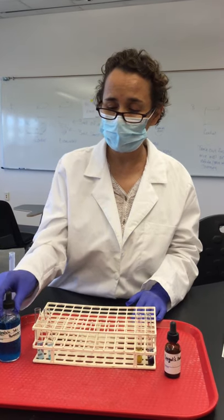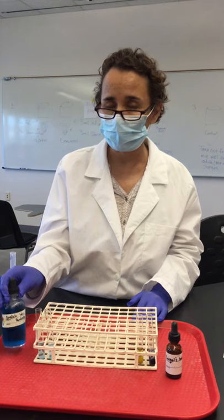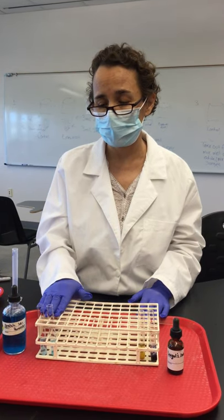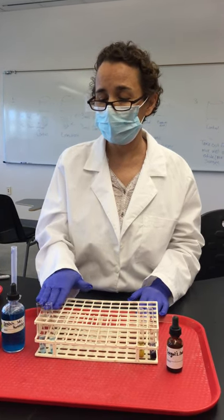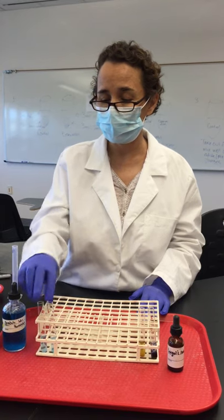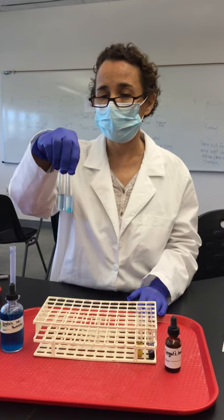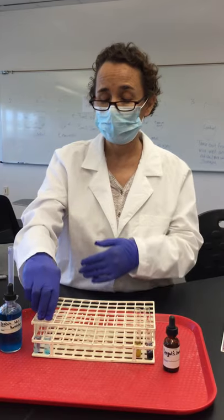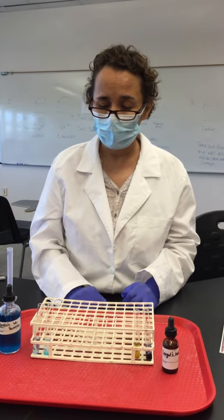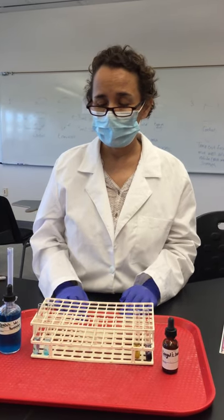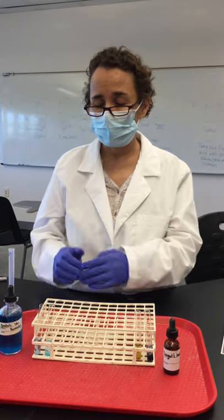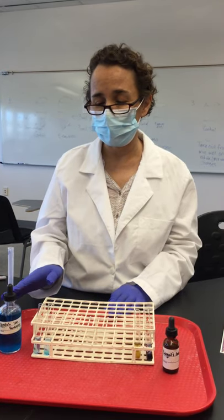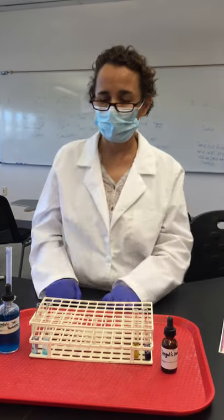The Benedict's reagent detects the presence of monosaccharides or glucose. To see the color change — which currently appears blue — we need to place the tubes in boiling water. I'm going to do that now and will be back to show the results.